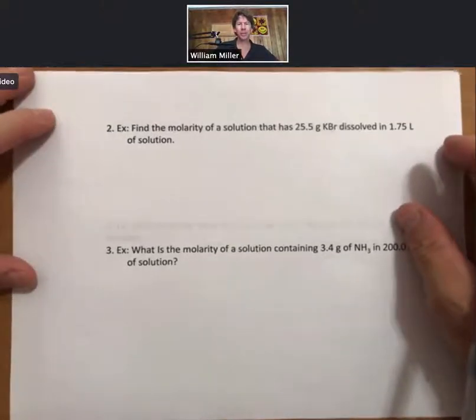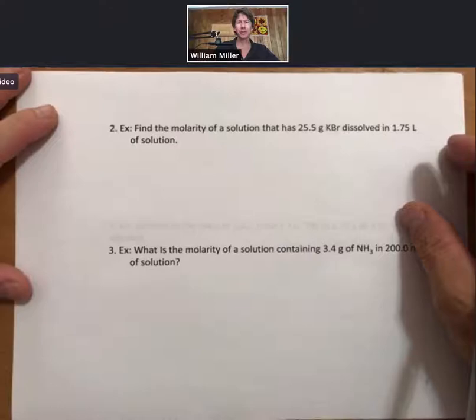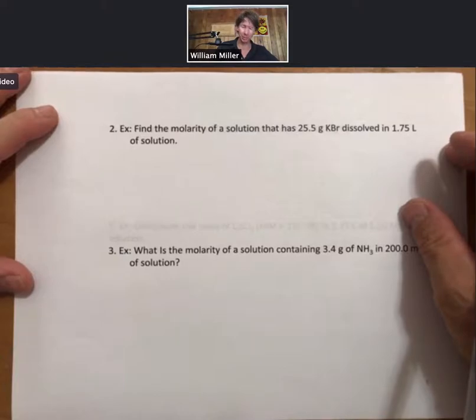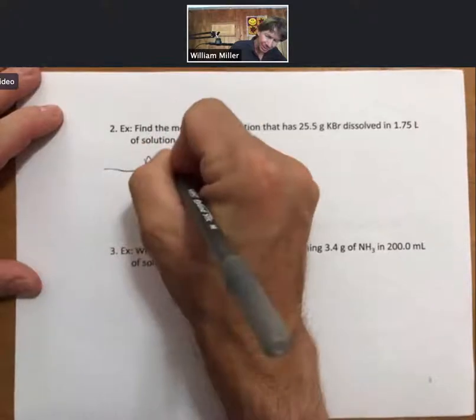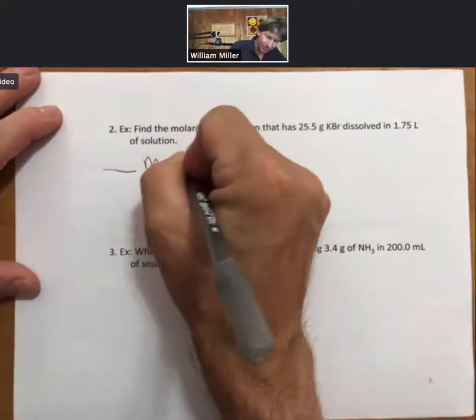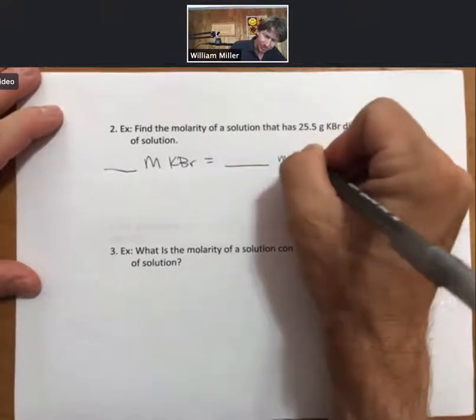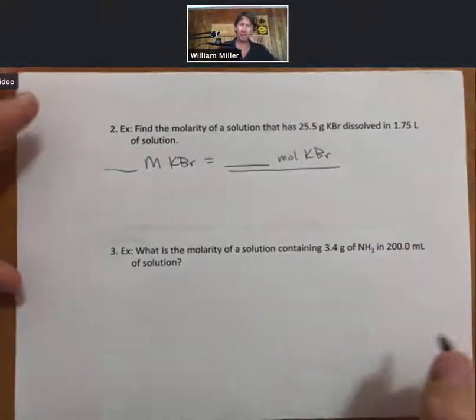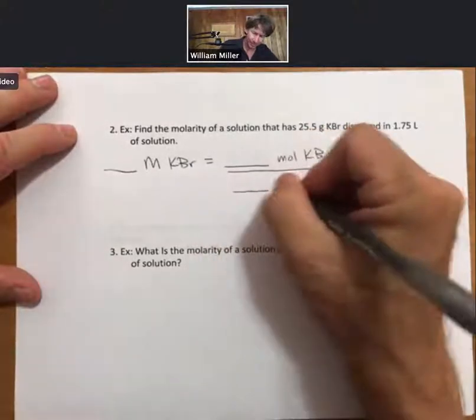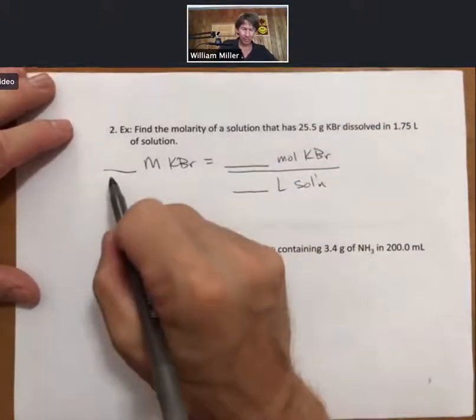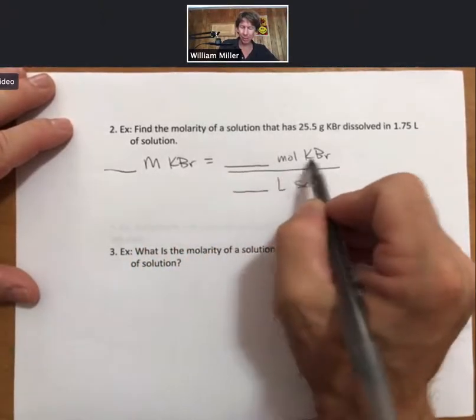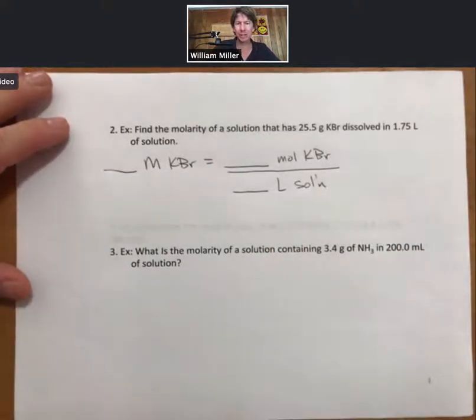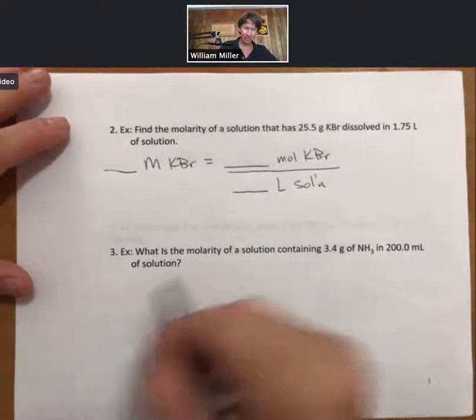Now, questions you're going to see on homework are more like this. Find the molarity of a solution that has 25.5 grams of potassium bromide dissolved in 1.75 liters of solution. Calculations for this. Again, lots of ways to do them. One way is to think about the definition of molarity, which means blank molarity or molar potassium bromide equals blank moles of potassium bromide per blank liters. This is the definition of molarity.